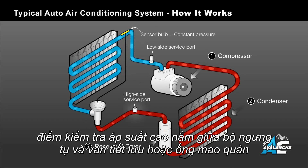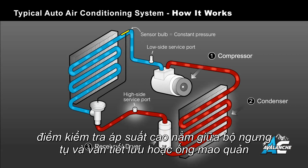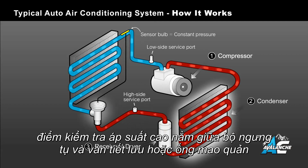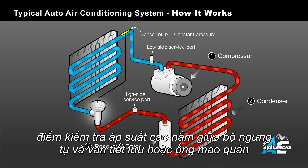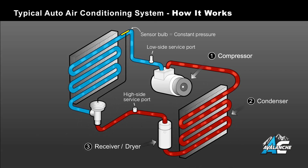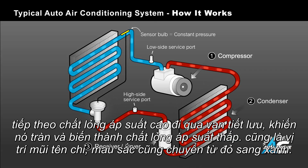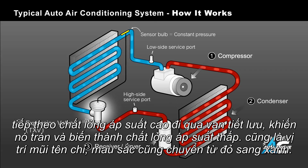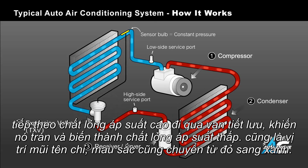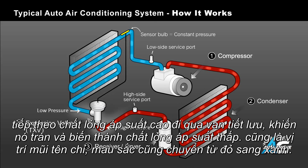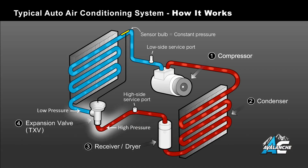The high side service port is located here, between the condenser and the expansion valve or orifice tube. Next, this high pressure liquid passes through the expansion valve, allowing it to expand and turn into a low pressure liquid, as indicated in our color change from red to blue.